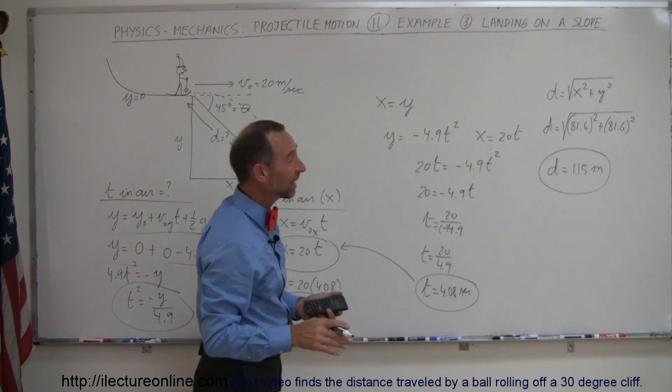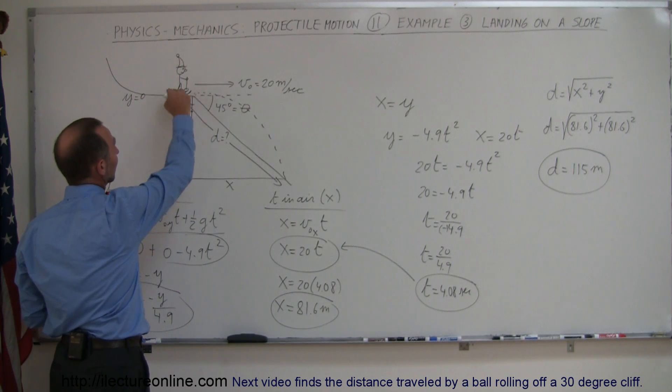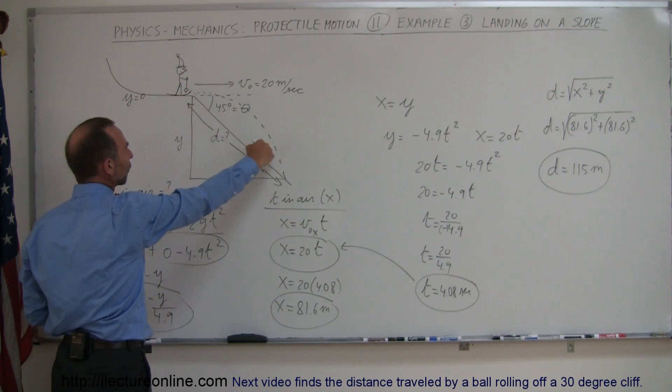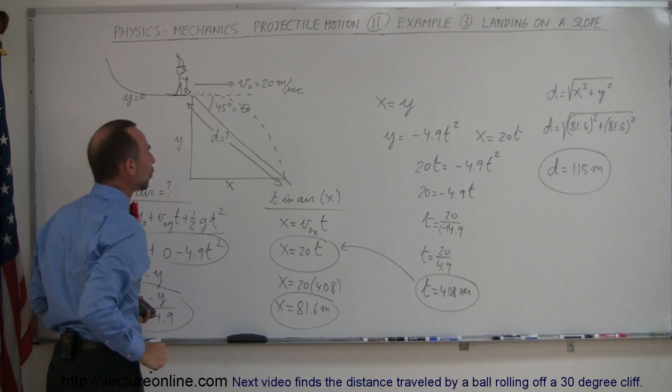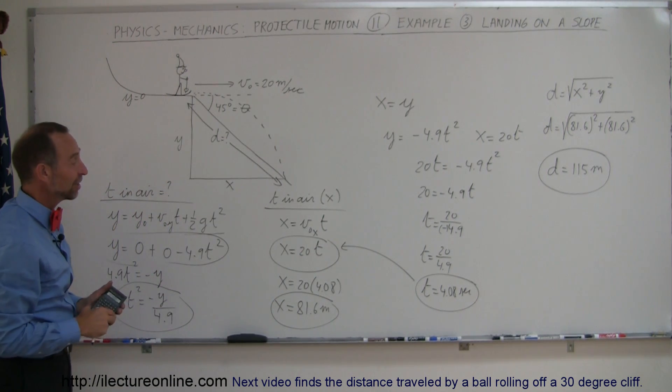which is a little bit more than the length of a football field, which means this skier comes, gets airborne, and will land over 100 meters further down the slope. Of course, 20 meters per second is quite fast on skis.